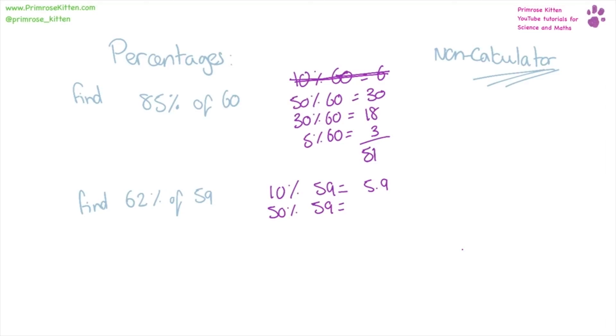Now we need to find 2%. We find 2% by finding 1%. So 1% of 59 is 0.59, and 1% of 59 is 0.59.